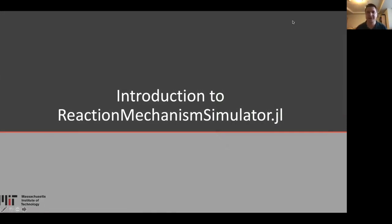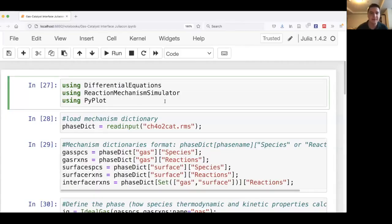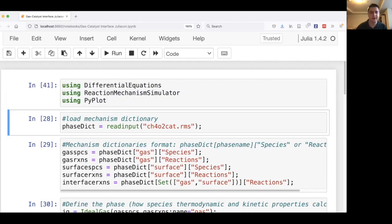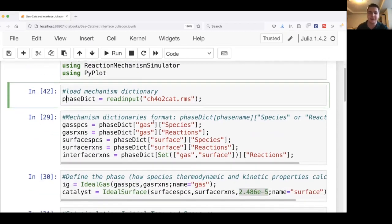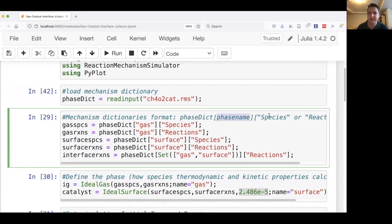Now let's go through a little introduction to the code. I've already done a basic run through to speed things along a little bit, but we import differential equations for solving the ODEs, reaction mechanism simulator, and pie plot for plotting. First we load an input file. This is an RMS input file, but this function will also accept a Chemkin input file, which is much more common. We load this into a phase dictionary, which is largely of this format where for each phase, it has the species and reactions.